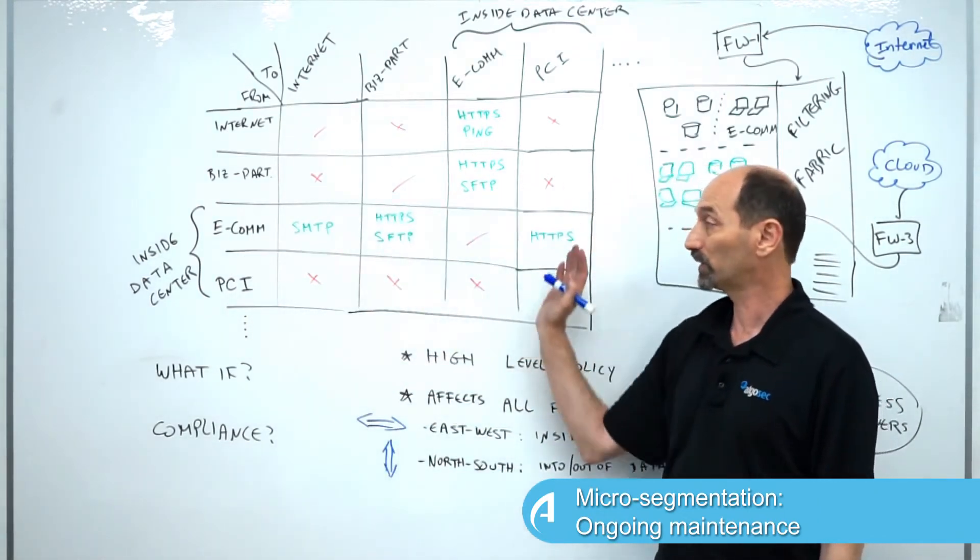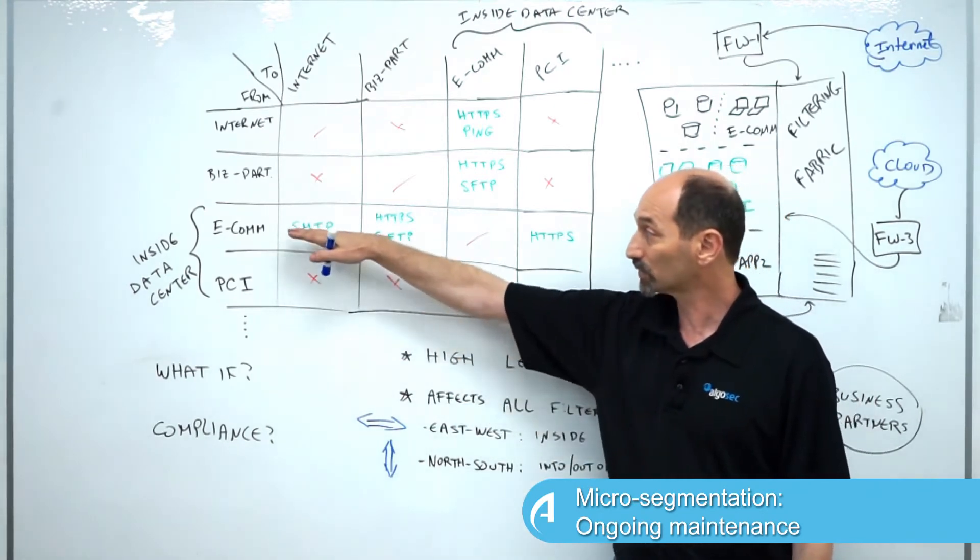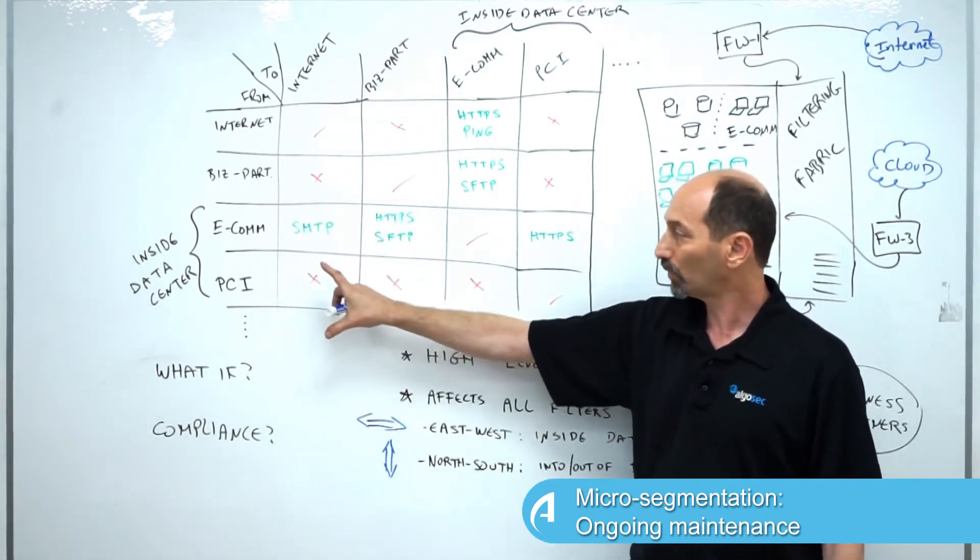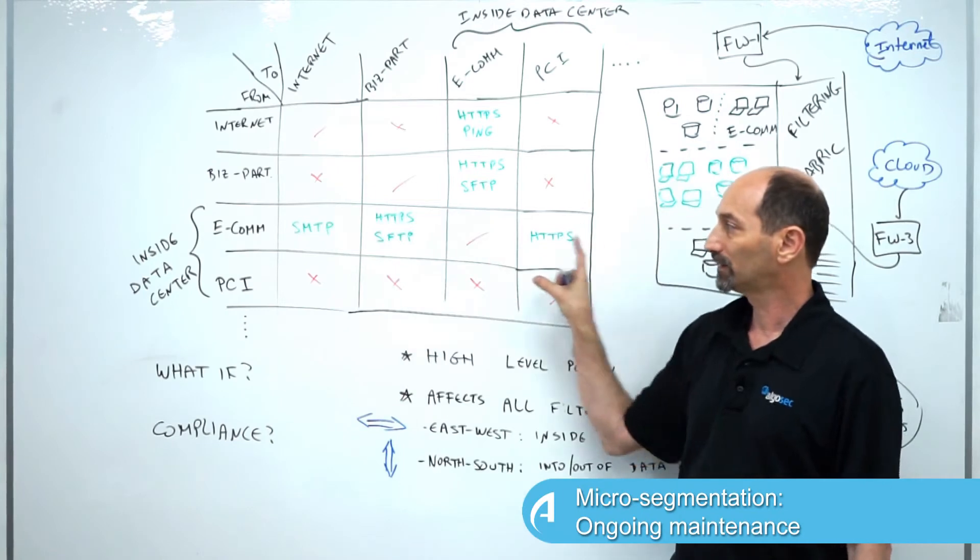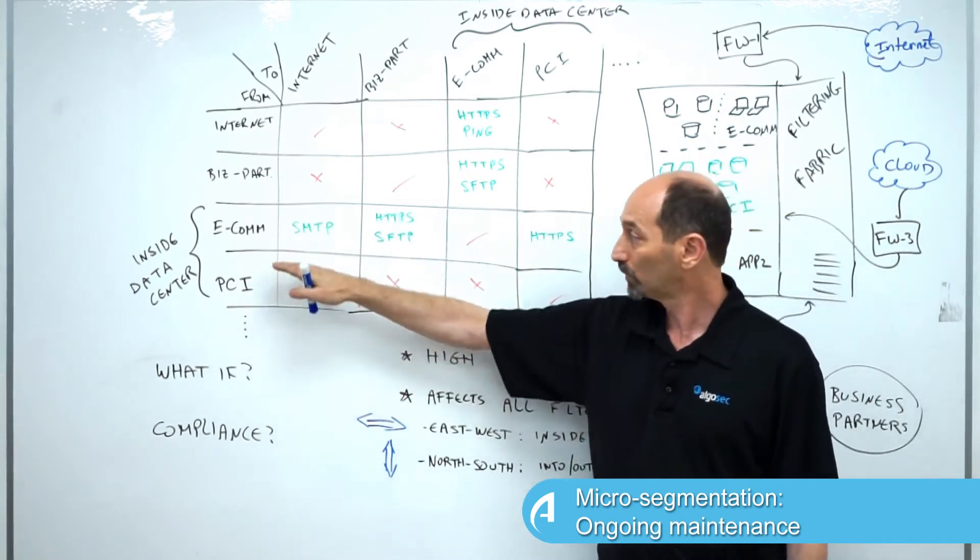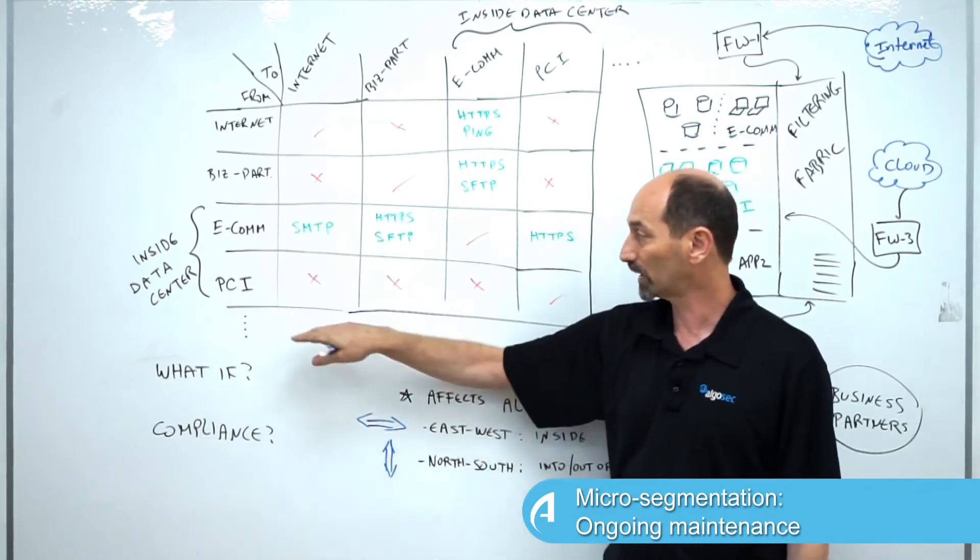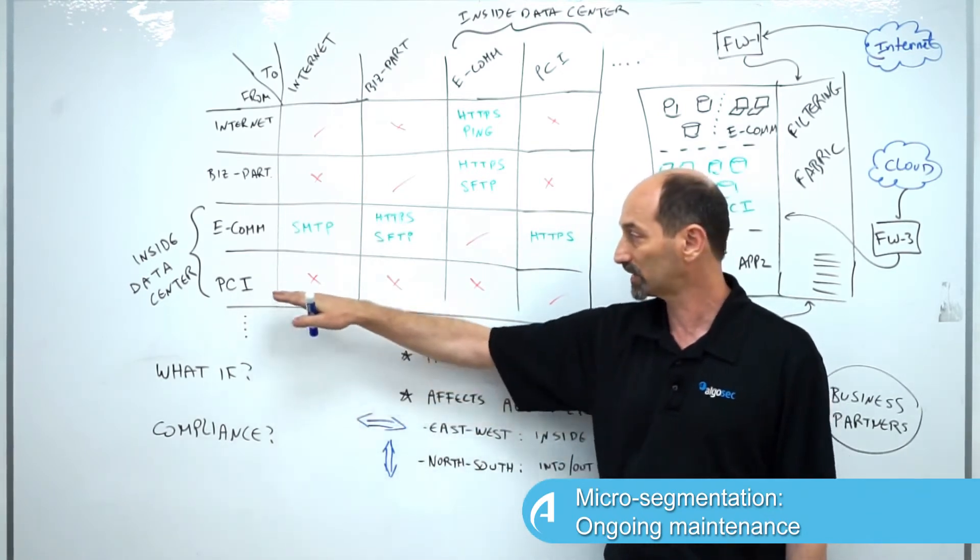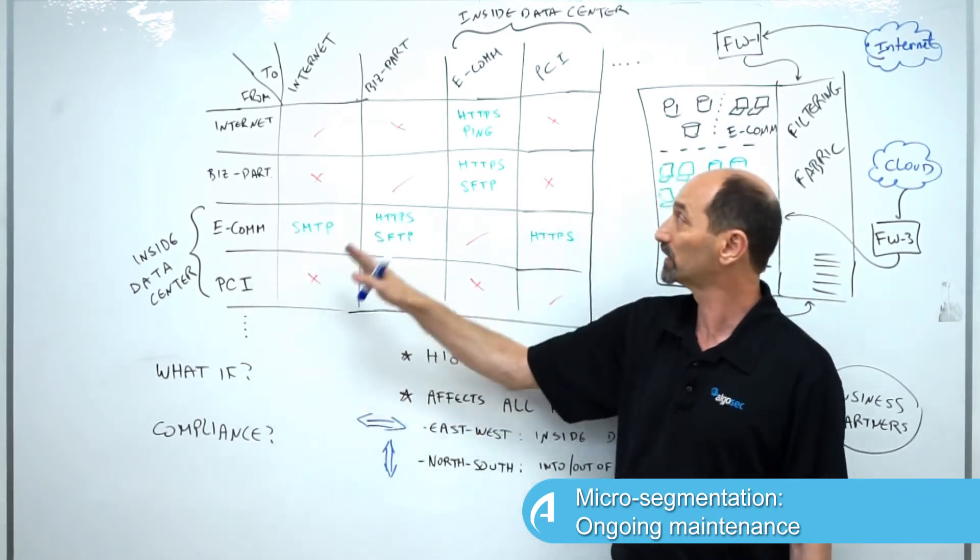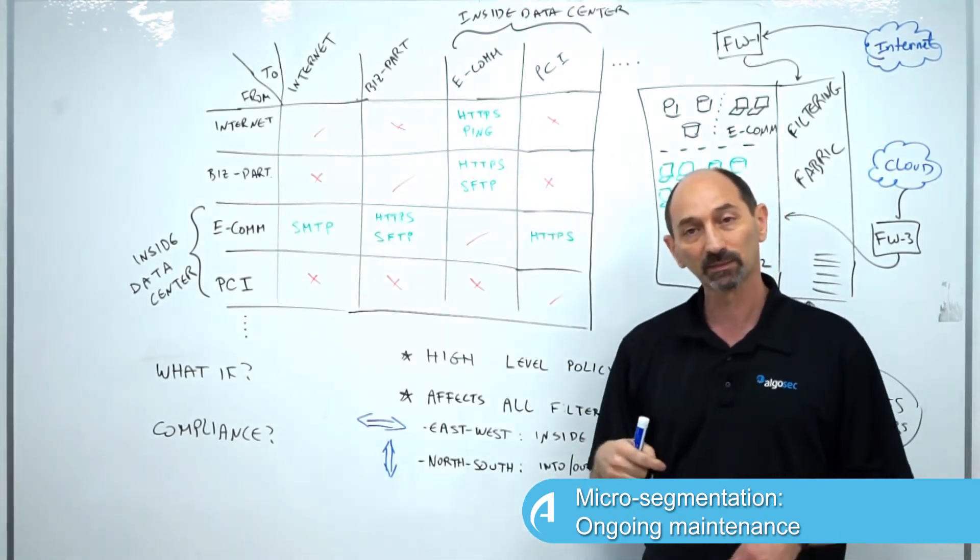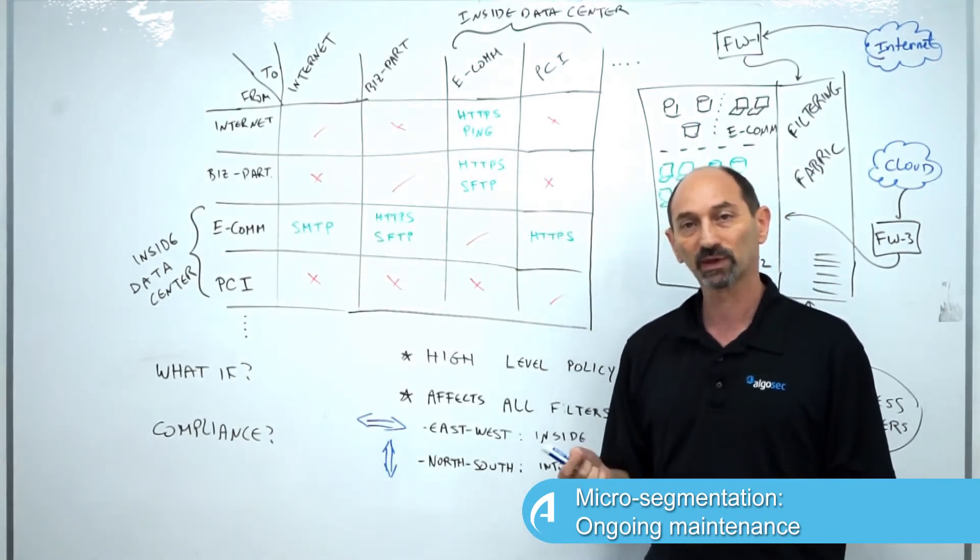What happened was we've identified additional zones inside the data center. We've identified specific segments and applications. Each one of these segments now can be documented in the information security policy as its own row. So we no longer have one big fat data center row. We have multiple rows, one for the e-commerce micro segment, one for the PCI micro segment, etc.